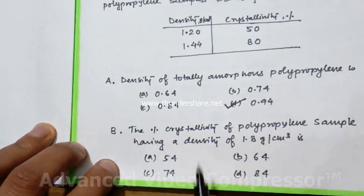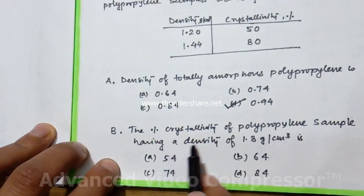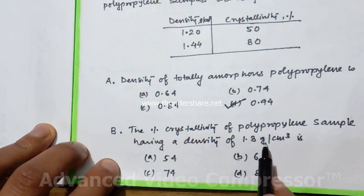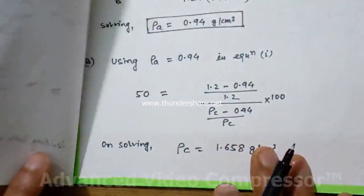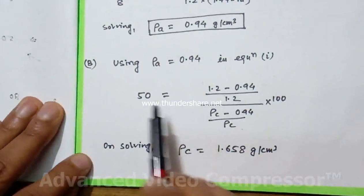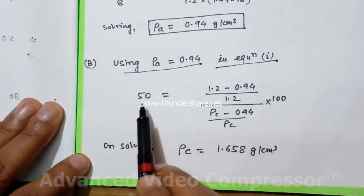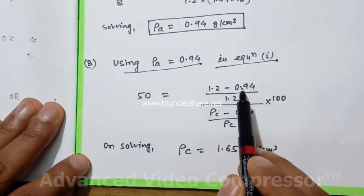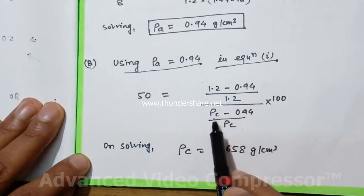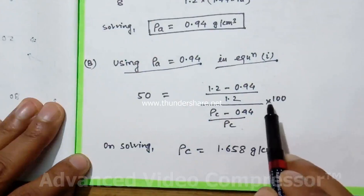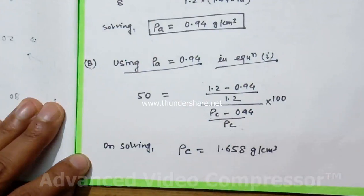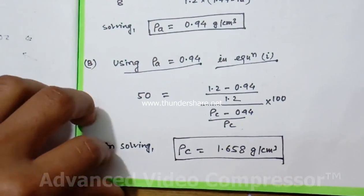For the second question, we will find the crystallinity for density 1.3 gram per centimeter cube. First, we use rho A equals 0.94 in equation 1. According to equation 1, 50 equals 1.2 minus 0.94 divided by 1.2, times rho C divided by rho C minus 0.94 times 100. On solving, rho C equals 1.658.